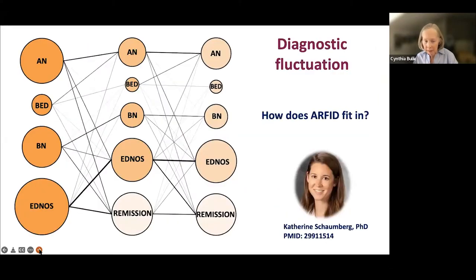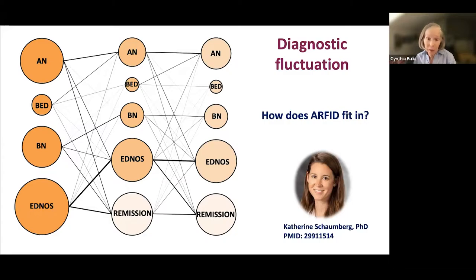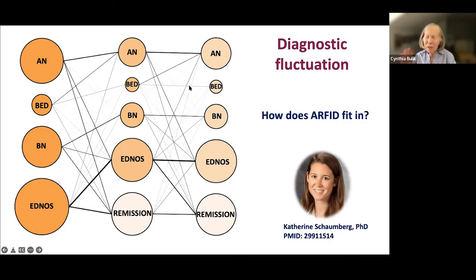Former UNC postdoc Katherine Schaumburg, now at the University of Wisconsin, studied diagnostic migration — how eating disorders fluctuate across time. In Sweden, when patients present for treatment for the first time they're entered into a national register and followed over time. As the crisscrossing lines show, anorexia doesn't necessarily stay anorexia: some people progress to other diagnoses, some go into remission, some develop bulimia and then BED. There's a lot of phenotypic change over time, and that's important to remember for genetic studies — how do we account for that fluctuation versus people who maintain one presentation?